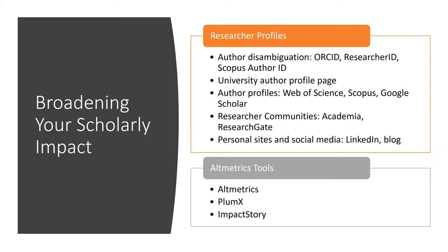You may notice an author name ambiguity problem when you search a name in a database. In order to resolve this, you could create an ORCID ID and claim a ResearcherID in Web of Science and an Author ID in Scopus.